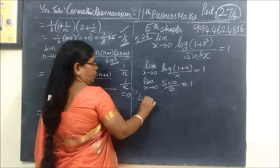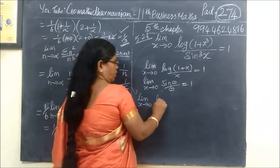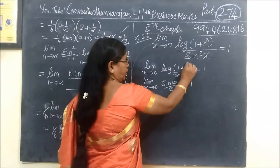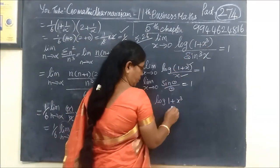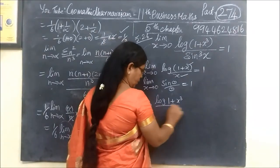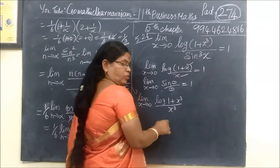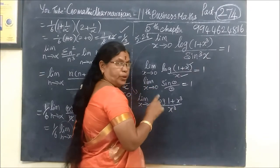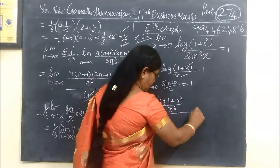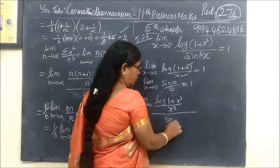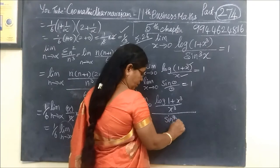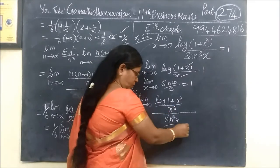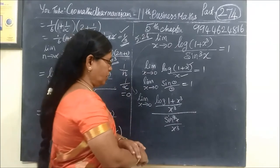So limit x tends to 0 of log of 1 plus x cubed. We manipulate the expression by introducing x cubed. Let's treat x cubed as the substitution variable so that the standard formula applies.